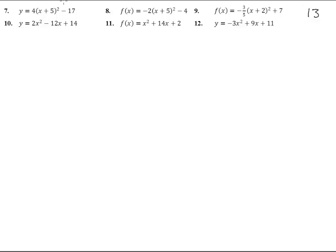Here we are on page 13, number 7 through 12. Number 7: y equals 4 times the quantity x plus 5 squared minus 17. This again looks like x squared has been shifted and moved and translated, so I'm going to do the graph of it first.